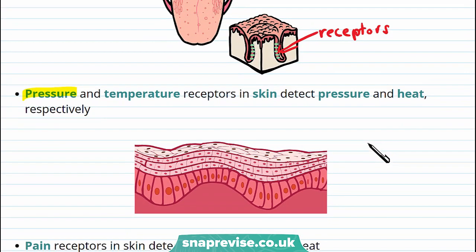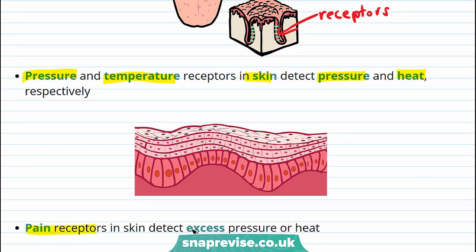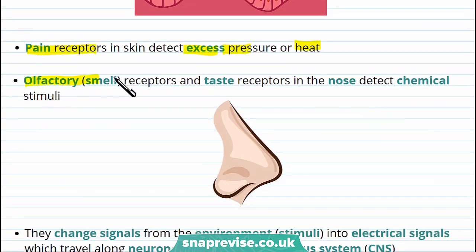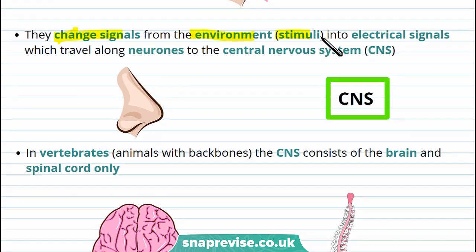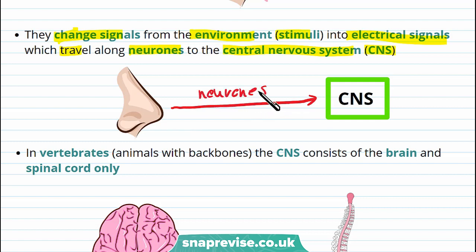There are also pressure and temperature receptors in our skin, which detect pressure and heat respectively. There are also pain receptors that detect excess pressure or heat — these are the things that will detect if you touch something like a hot pan. We also have olfactory or smell receptors and taste receptors in the nose, which detect chemical stimuli. All of these receptors change signals from the environment, or stimuli, into electrical signals, and these travel along neurons to the central nervous system.